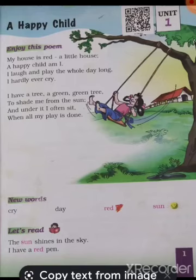The poem meaning is now clear to you. Now, the new words given below the poem: Cry — C-R-Y — it means रोना (to cry). Day — D-A-Y — it means दिन (day). Red — R-E-D — it means लाल रंग (red color). Sun — S-U-N — it means सूरज (sun).